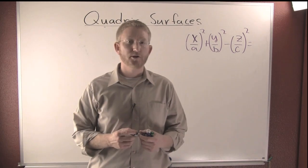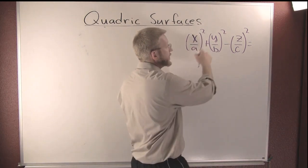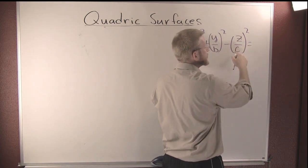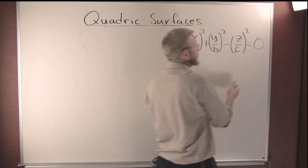One last quadric surface we should mention: that's when x over a, y over b, and z over c equals zero.